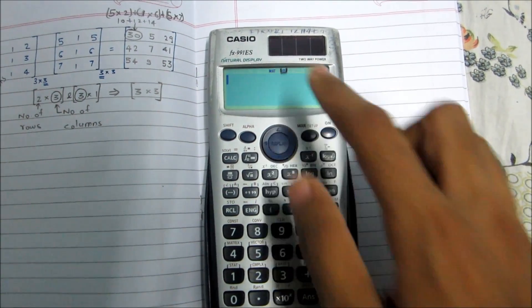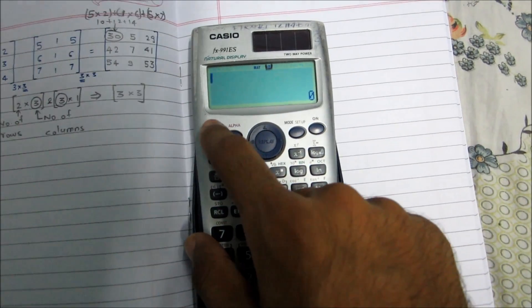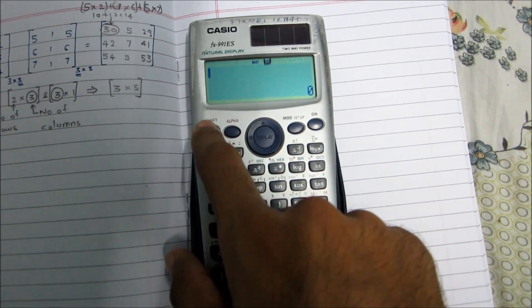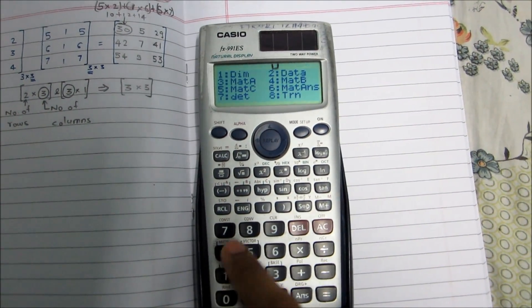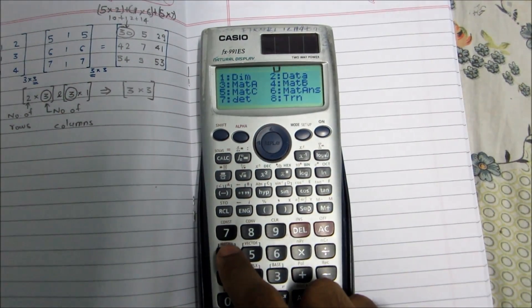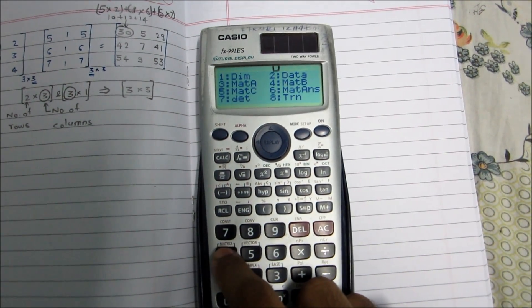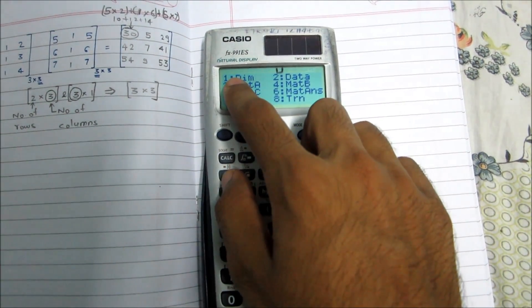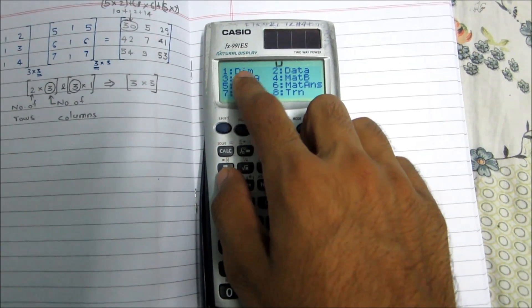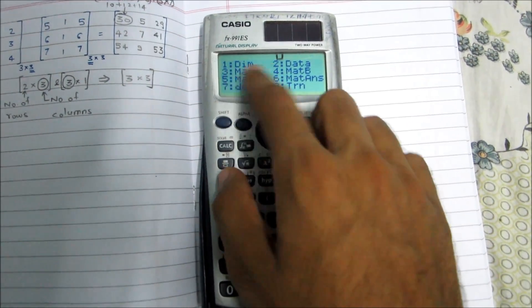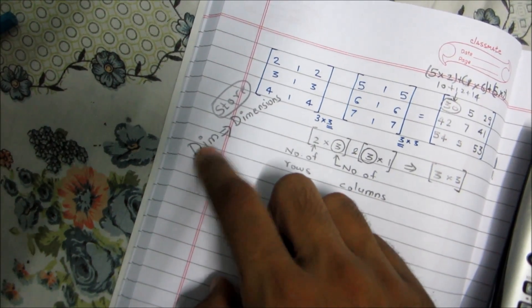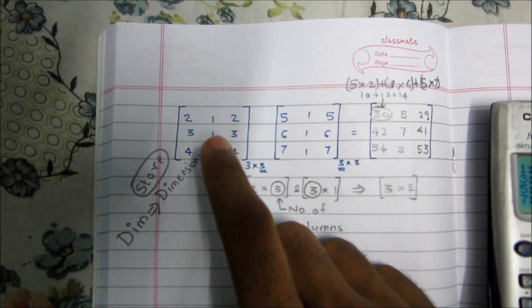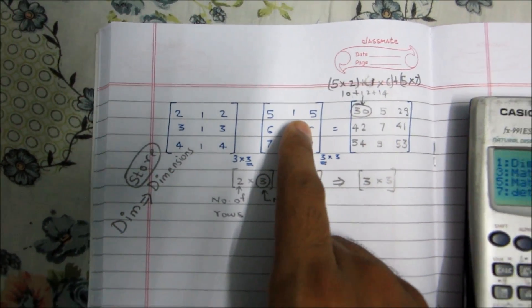Now the calculator is in matrix mode — you can see that here. Then press Shift, then 4, and we are in the matrix menu. 'Dim' is for dimension — used to store the dimensions of a matrix. We will use it to store Matrix A and Matrix B.